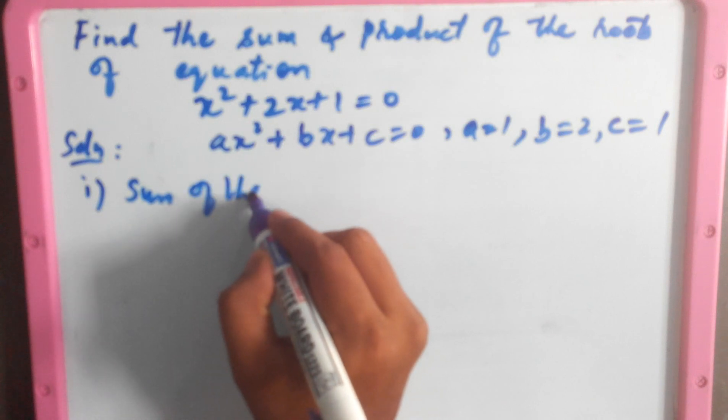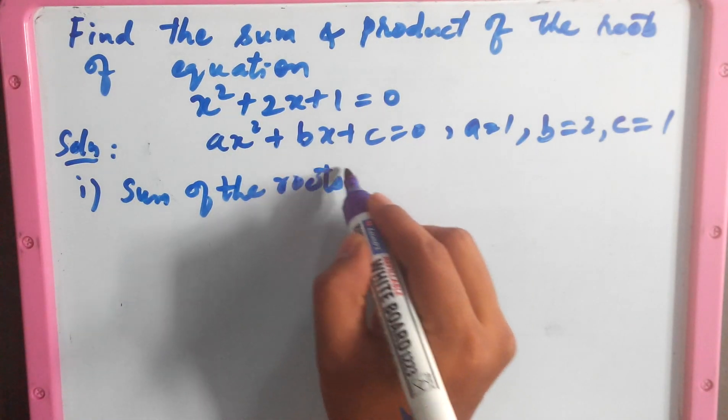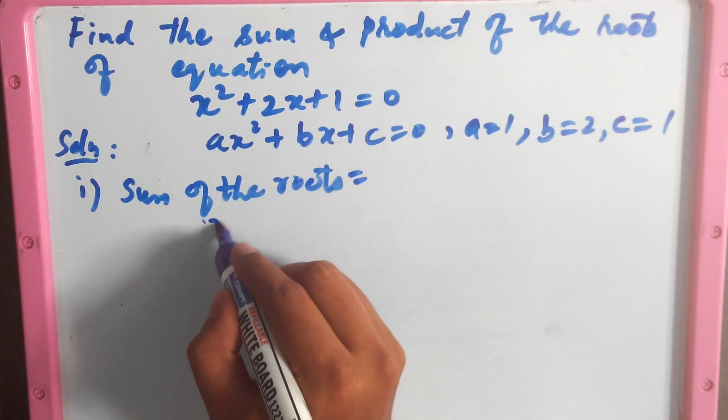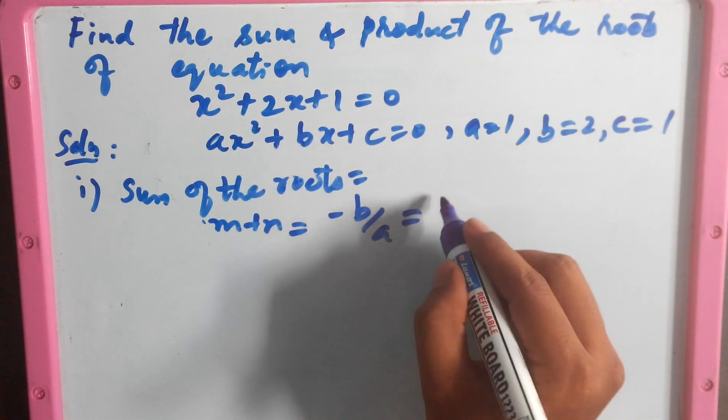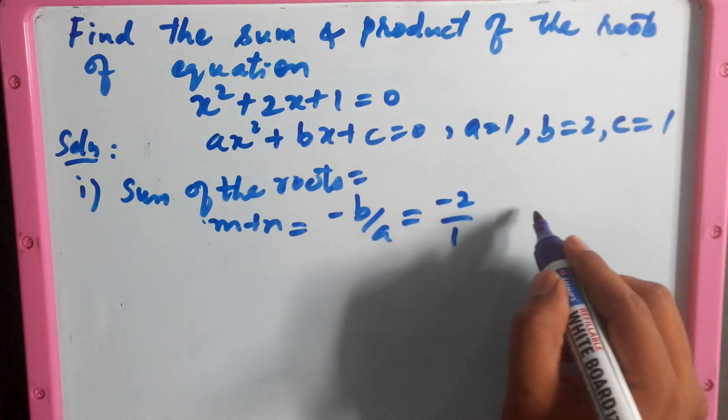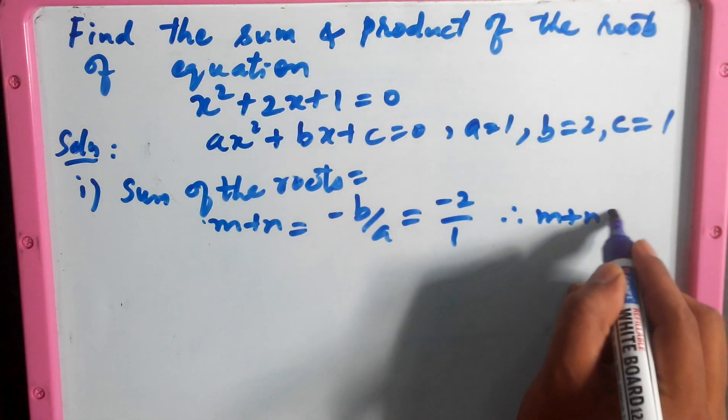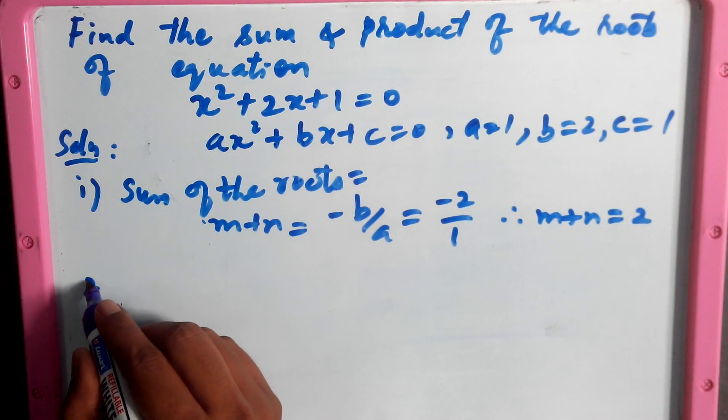The sum of the roots formula is m + n = -b/a. We have b = 2, so -2/1, therefore m + n = -2. Then second,